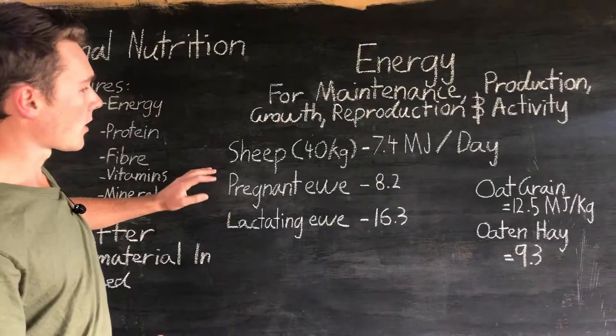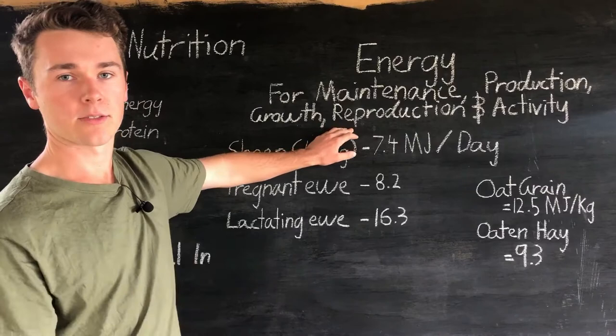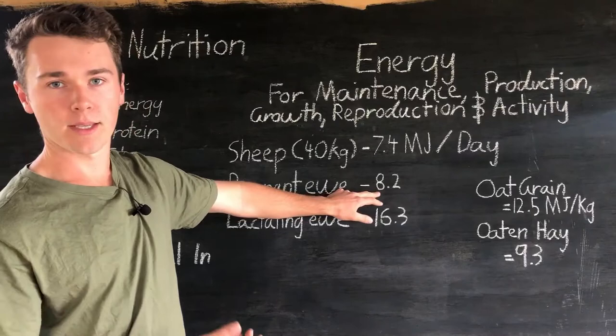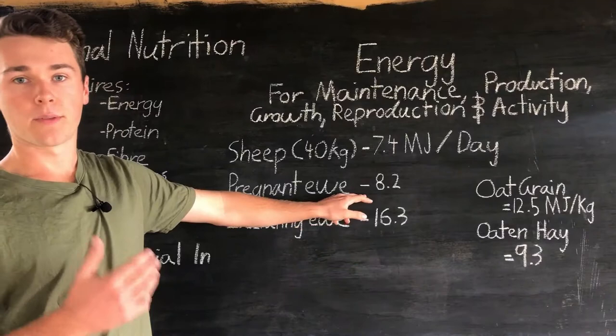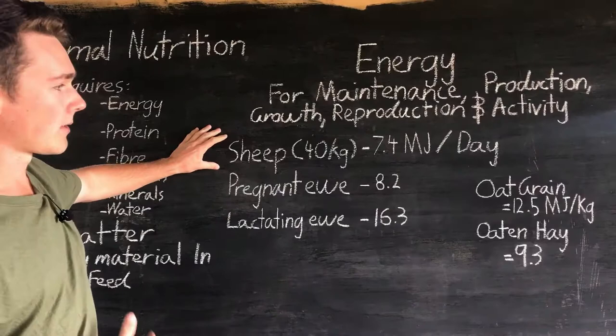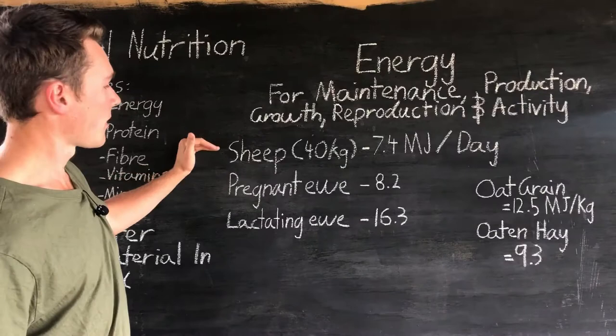Compare this to a pregnant ewe: as well as maintenance, it's also performing a reproductive function, so it needs 8.2 megajoules of energy. The difference goes towards growing the lamb. A lactating ewe requires almost double that of the pregnant ewe — it has to produce enough milk for the lamb as well as undergo maintenance. This is a great demonstration of how nutritional requirements change even for the same animal — before pregnancy, during pregnancy, and after pregnancy when lactating.